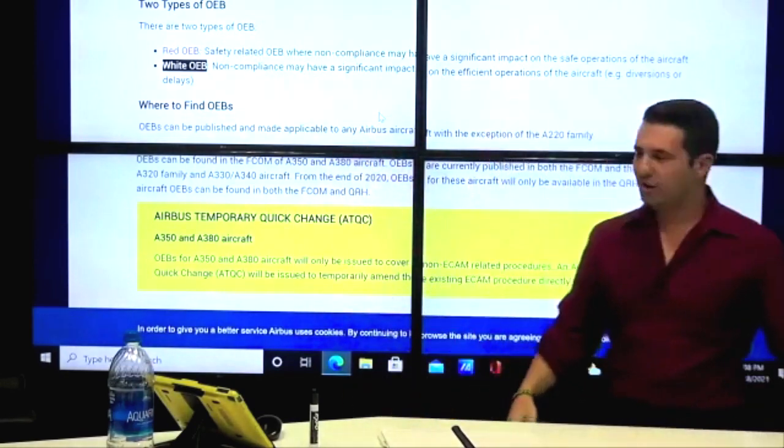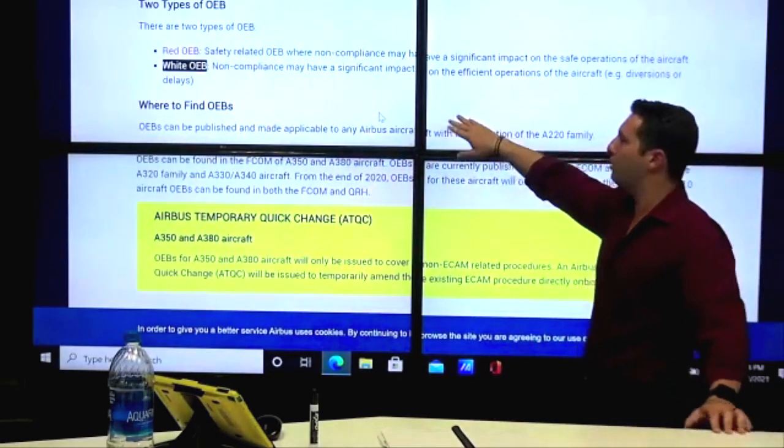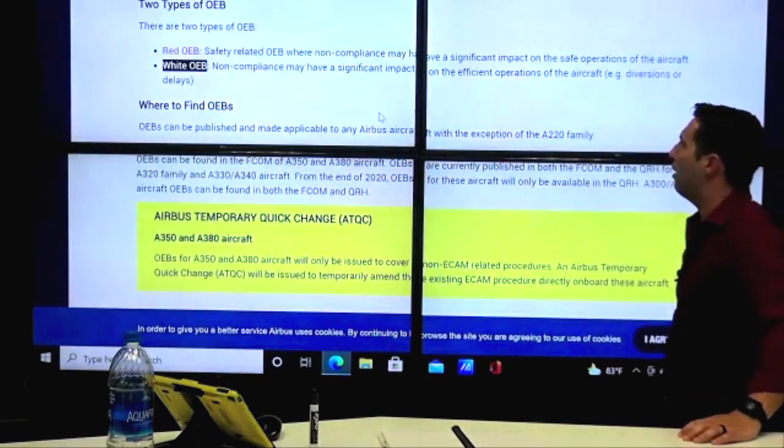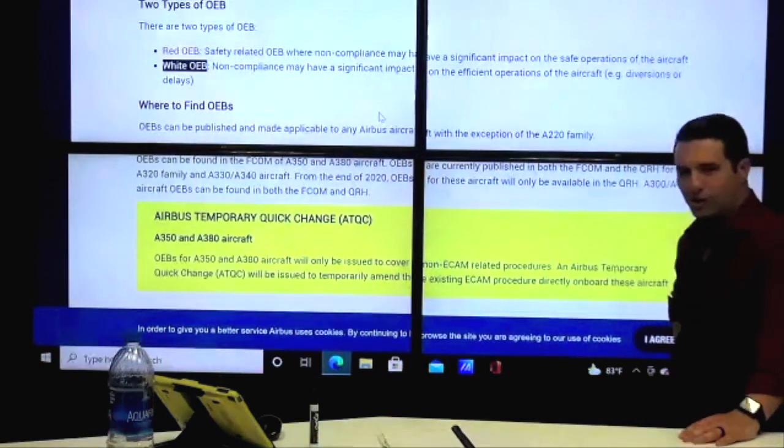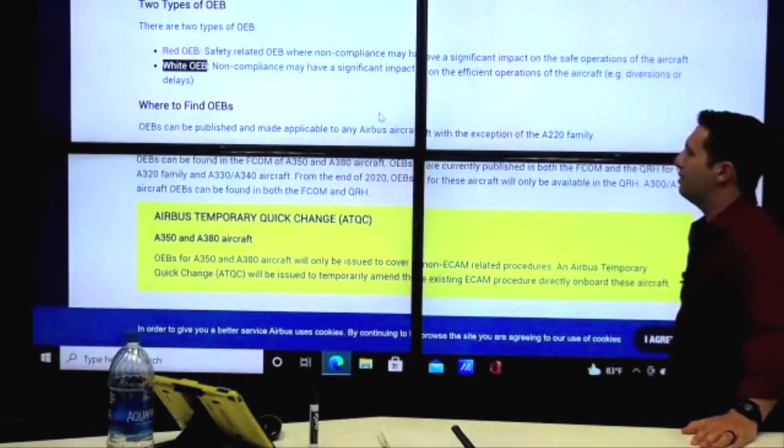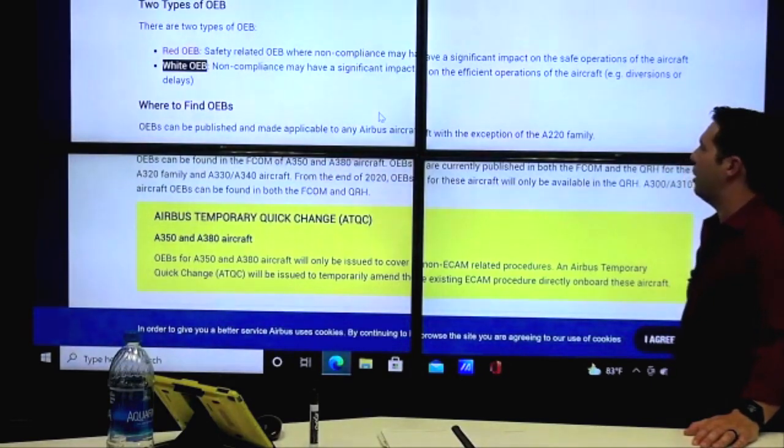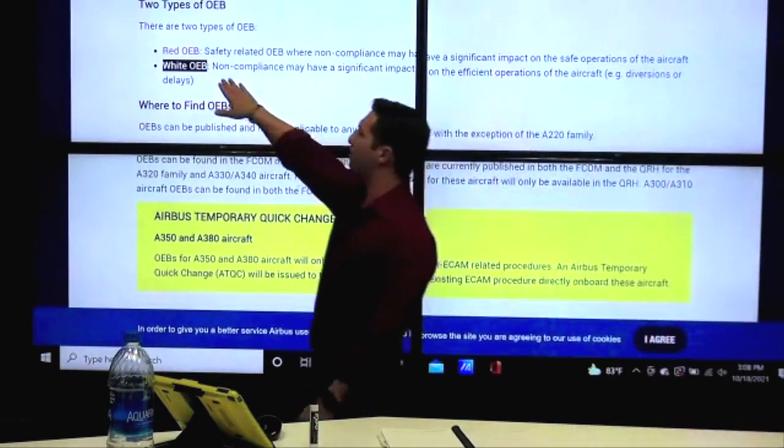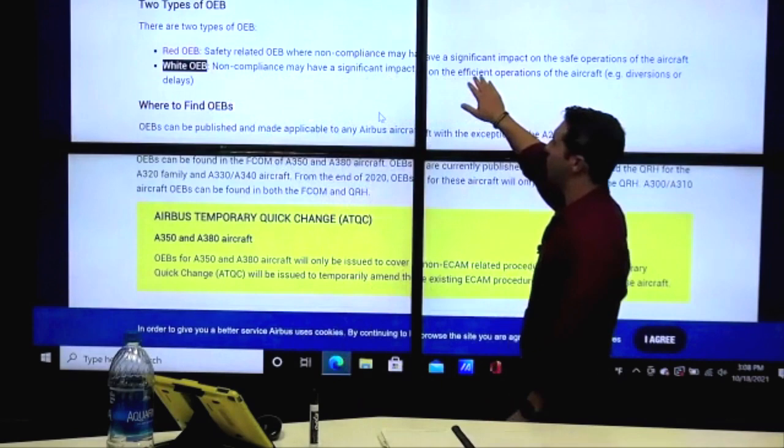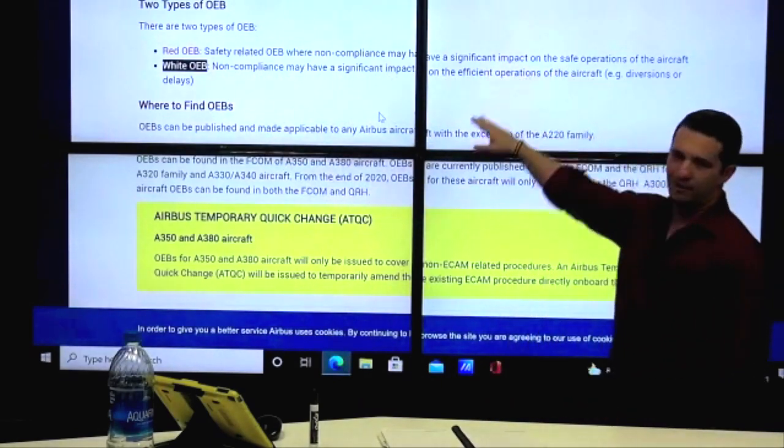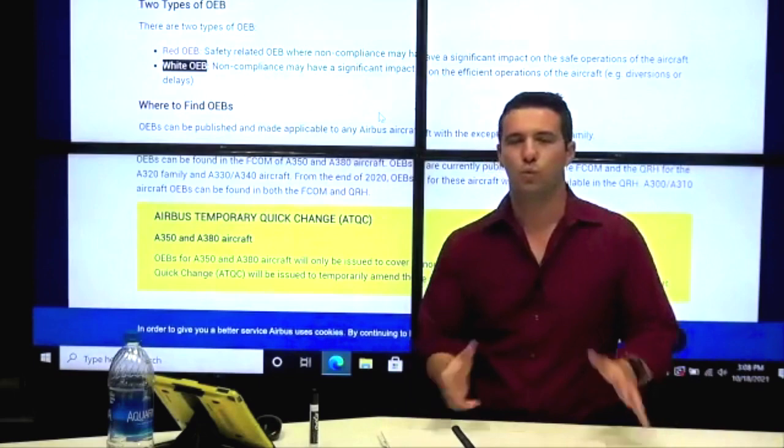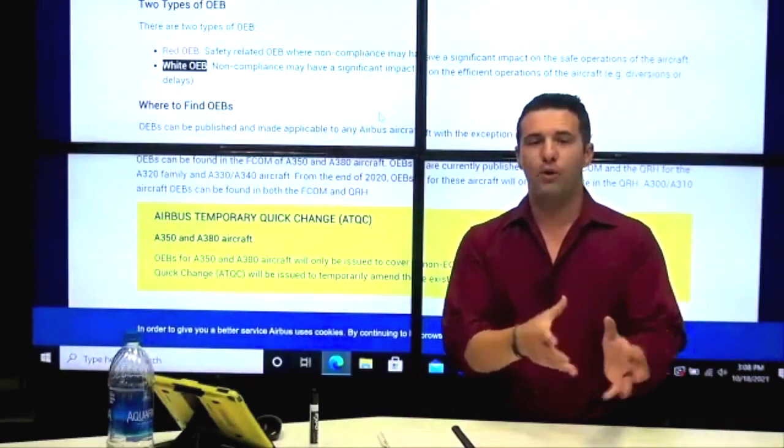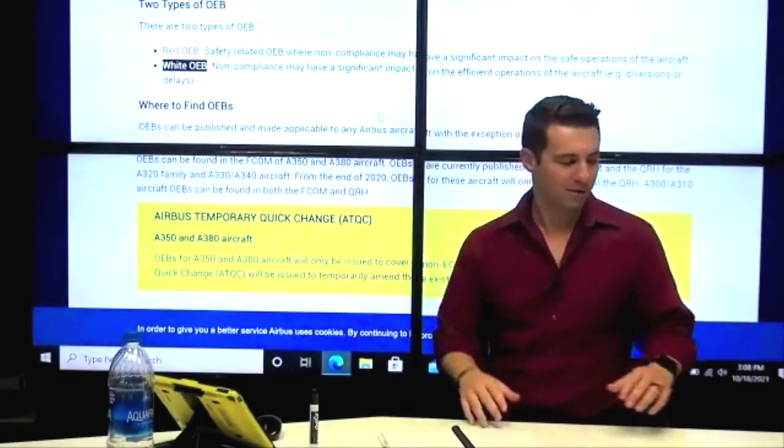It does come color-coded, either red or white. Red is safety-related, where noncompliance may have a significant impact on the safe operation of the aircraft. White or noncompliance may have a significant impact on the efficient operation. So white OEB is basically effect on efficiency of the plane, red OEB is an effect on safety of the plane. Red, high priority, white, it's about efficiency.